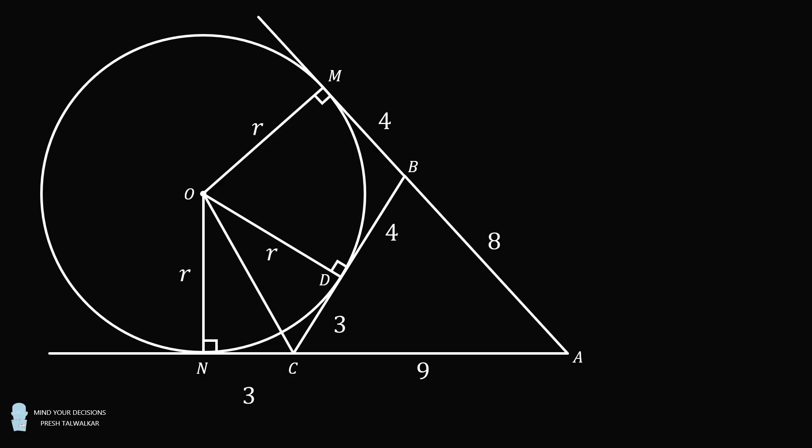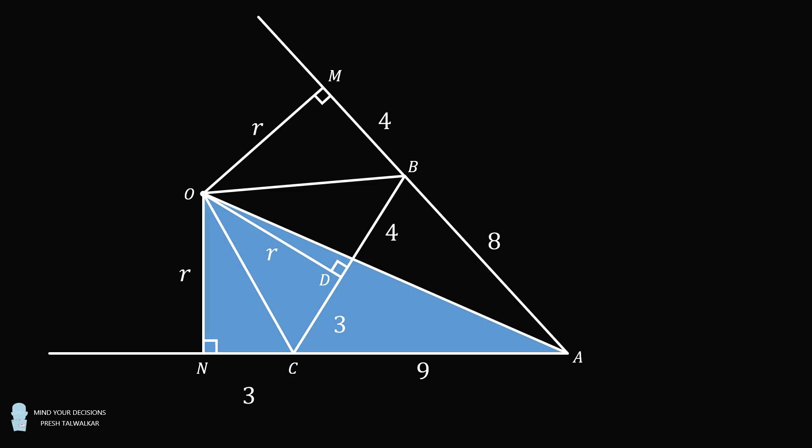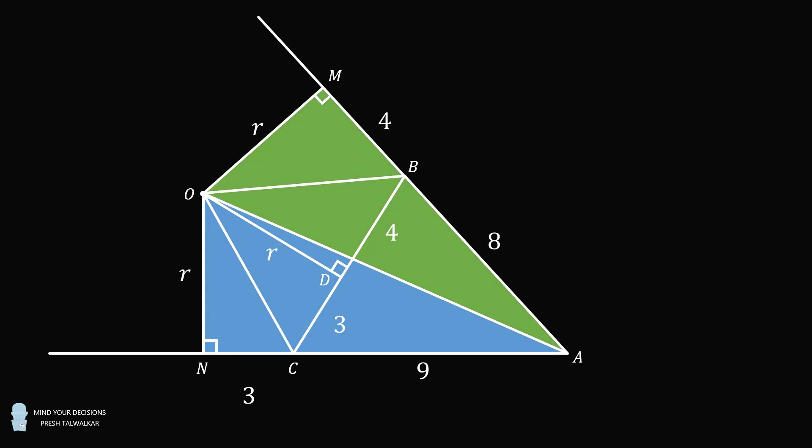Then, construct OC, OB, and finally OA. We will now take a look at the area of some shapes. Let's get rid of the circle. Now, consider the entire quadrilateral ANOM.